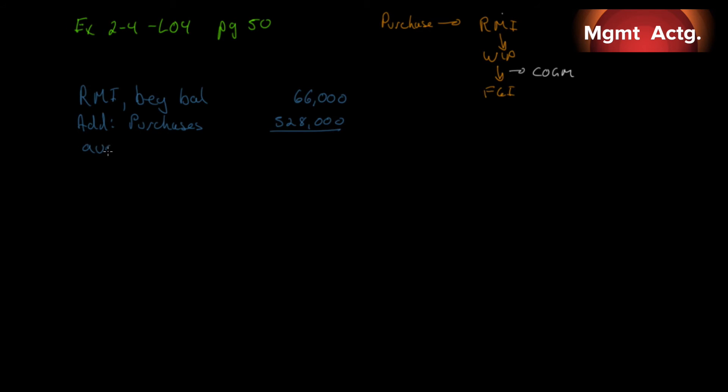$528,000. So, that means our raw materials available. This is what we had available between what we started with and what we purchased. We had $594,000, right? 6 and 8 is 4. That's 6 and 9 and 5. There you go. Add it up. Less what we have left. Our raw materials inventory ending balance. And are we told that? Yes, we are. It's $78,000. So, if we take $78,000 off of that, we should get $516,000. So, this is raw material used. It was $516,000. Great. So, that's step one.